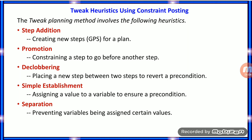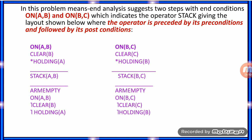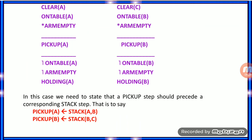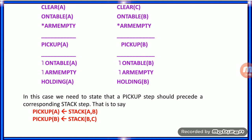Using these five tweak heuristics, you can achieve a plan for constraint posting. Looking at the diagram, within stack(A, B), it has been divided into two parts: above the line (precondition) and below the line (postcondition). For pickup(A), the preconditions are clear(A), on_table(A), and arm empty. To state that a pickup step should precede a corresponding stack step, you promote that step to go before the other.